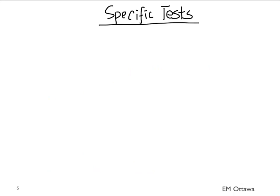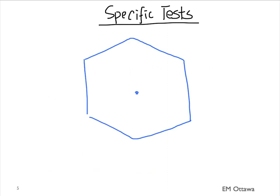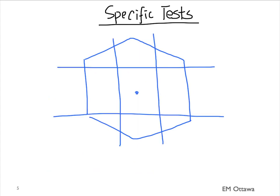Now let's move on to specific tests. We'll go back to the classification we discussed before — dividing the abdomen into nine different areas with the umbilicus in the middle. Based on our clinical suspicion, we will order the specific test. First, in the right upper quadrant, for a patient we're worried about hepatitis, we may draw inflammatory markers such as ALT and AST. For patients with cholecystitis or choledocholithiasis, we may add obstructive enzymes such as bilirubin and ALP.